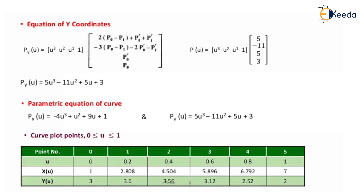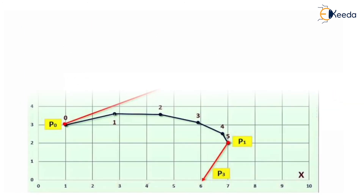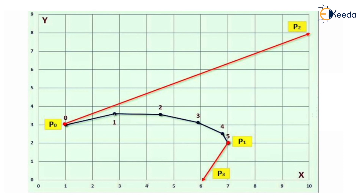Now we put five points u = 0, 0.2, 0.4, 0.6, 0.8, and 1 into the equations. When u = 0, Px = 1 and Py = 3. We calculate all remaining values and plot them on a graph. Note that P2-P0 gives one tangent vector and P3-P1 gives the other. Thank you, hope you understood well.